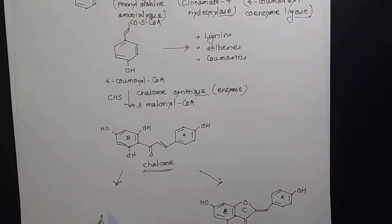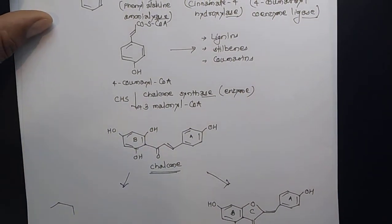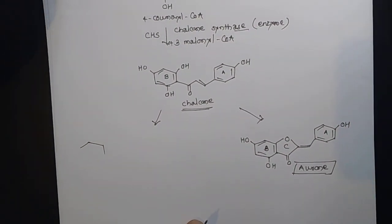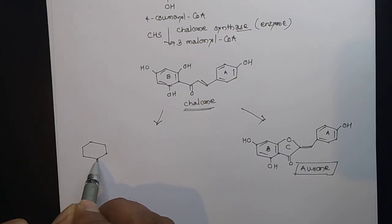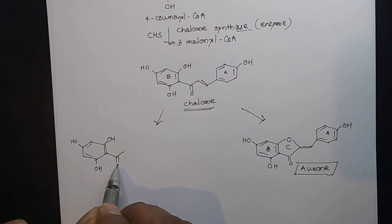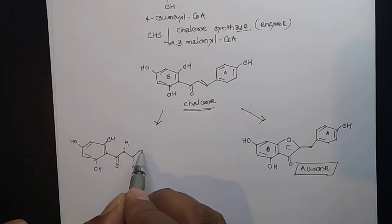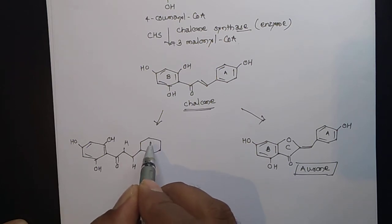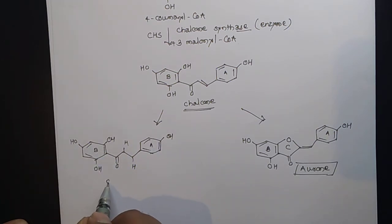Also from chalcone we can prepare dihydrochalcone. Dihydrochalcone is easy to understand — the structure is as such but rather than the double bond there will be 2 hydrogens added, and there is an OH group. This is the A ring, this is the B ring, and the name of this compound is dihydrochalcone.